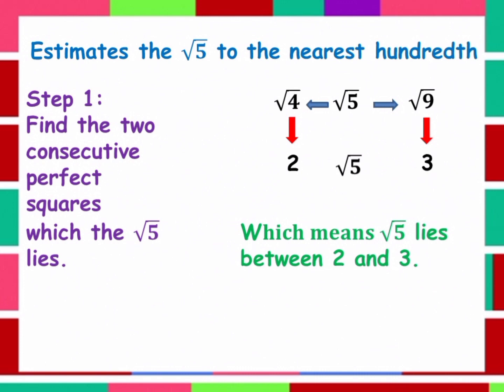Therefore, the whole number we are going to use is the square root of the lower perfect square. Always remember: when finding the square root of a number that is not a perfect square, the whole number we use is the square root of the lower perfect square. In our given, the two perfect squares are 4 and 9, and the lower one is 4. The square root of 4 is 2, so the whole number for the square root of 5 is 2. Next, we find the decimal part.